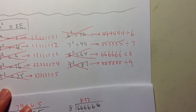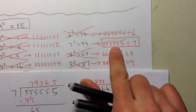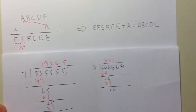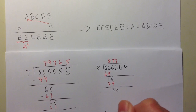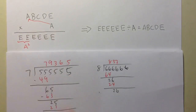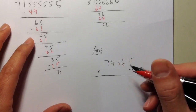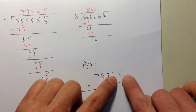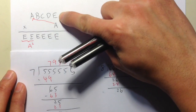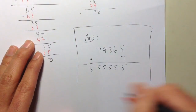So the only possibility is 555555 ÷ 7 = 79365. This satisfies all the conditions. Therefore, the answer is: the five-digit number 79365, multiplied by 7 (which is A), produces the six-digit number 555555 — all 5s, exactly the last digit of the original number. All five digits of 79365 are different. That's the solution!